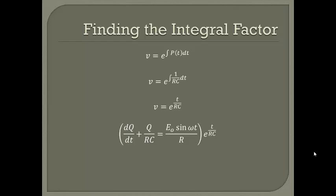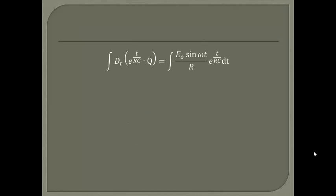Multiplying by this integrating factor, we get d/dt [e^(t/RC) · Q] = (E₀ sine(ωt) / R) · e^(t/RC) dt. Integrating both sides, we get this equation, and now we still have to integrate the remaining term.